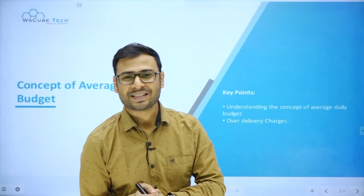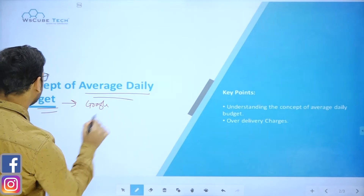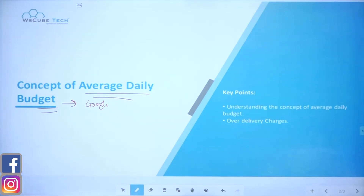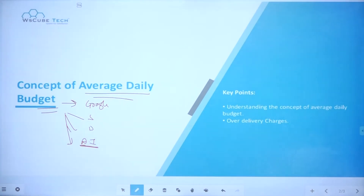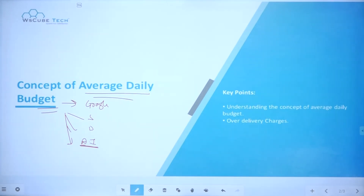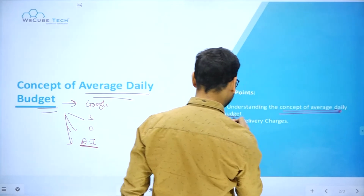Hey everyone, welcome to WSQTech. I'm Umar Taskeer. In this particular video, I'm going to talk about the average daily budget option in Google Ads. So what is this average daily budget? Whenever we are running campaigns on Google — whether search ads, display ads, or app ads — we have to give some amount to Google for running ads on their platform. We set this budget on a daily basis, and that is called our daily budget.